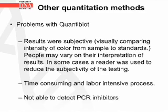Problems with the quantablot system: results were subjective because you were visually comparing intensity of color from sample to standards, and people may vary in their interpretation of the results. In some cases a reader was used to reduce the subjectivity of the testing. Also, the method was extremely time-consuming and labor-intensive, and it was not able to detect any PCR inhibitors.